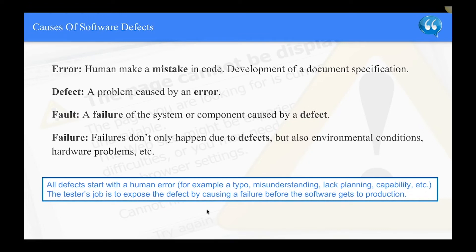What are the causes of software defects? All defects start with a human error — for example, a typo, misunderstanding, lack of planning, capability, etc. The tester's job is to expose the defect by causing a failure before the software gets to production. An error is a mistake a human makes in code or in development of a document specification — associate error with a human. A defect is a problem caused by an error. A fault is a failure of the system or component caused by a defect. And a failure can happen not only due to defects, but also environmental conditions, hardware problems, etc.